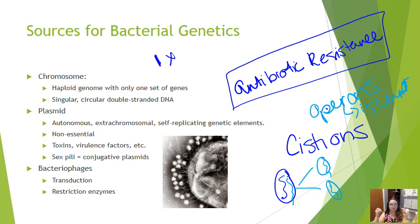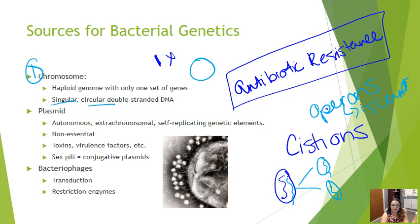When we think about genetics in a bacterium, there are three sources where genetic material might come from. The first is the chromosome — a haploid genome with only one complete set of genes. It's typically a singular, circular, double-stranded DNA molecule, and replication takes place in both directions to speed up the process.